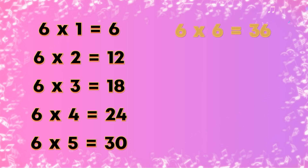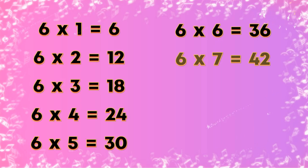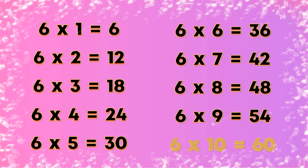Table of 6: 6×1=6, 6×2=12, 6×3=18, 6×4=24, 6×5=30, 6×6=36, 6×7=42, 6×8=48, 6×9=54, 6×10=60.